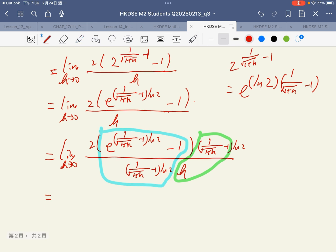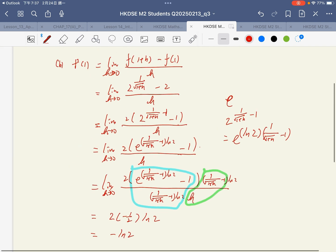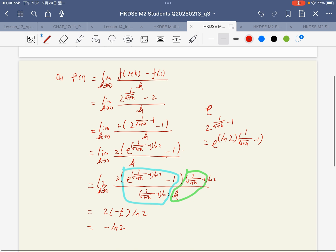Finally, I got the answer: 2 times 1 over 2 times ln 2, which is negative ln 2. The answer should be negative ln 2. This was a crazy question, but anyway I solved it.